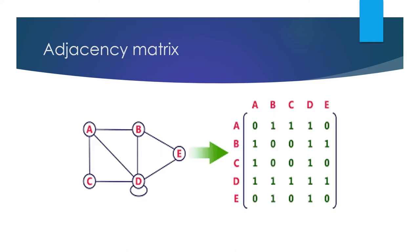Adjacency matrix. The vertices are a, b, c, d, and e. The edges are represented in the matrix. For a to a, there is no loop or edge, so it is written as 0. For a to b, there is one edge, so it is written as 1. For a to c and a to d, there are edges, so it is written as 1, 1. For a to e, there is no edge, so it is taken as 0.